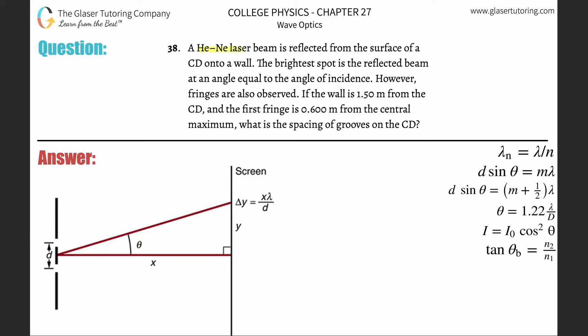Number 38. A helium-neon laser beam is reflected from the surface of a CD onto a wall. The brightest spot is the reflected beam at an angle equal to the angle of incidence. However, fringes are also observed. If the wall is 1.5 meters from the CD and the first fringe is 0.6 meters from the central maximum, what is the spacing of grooves on the CD?